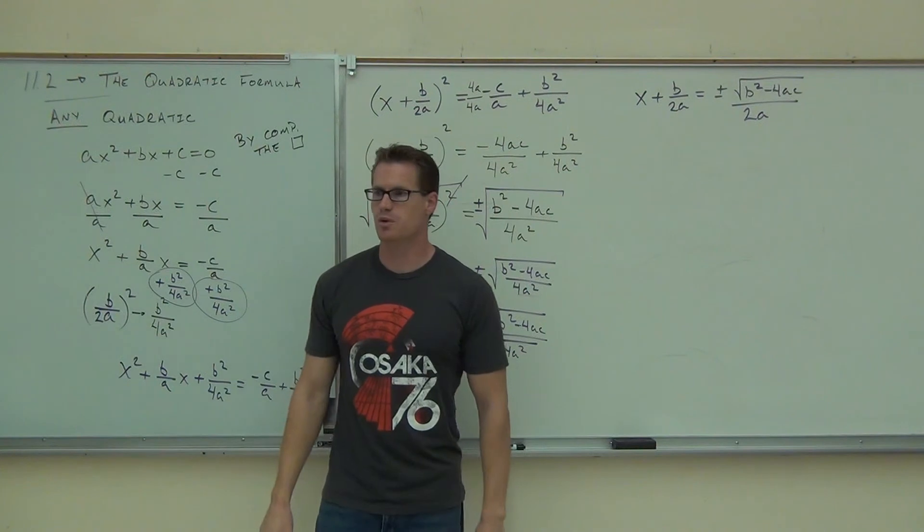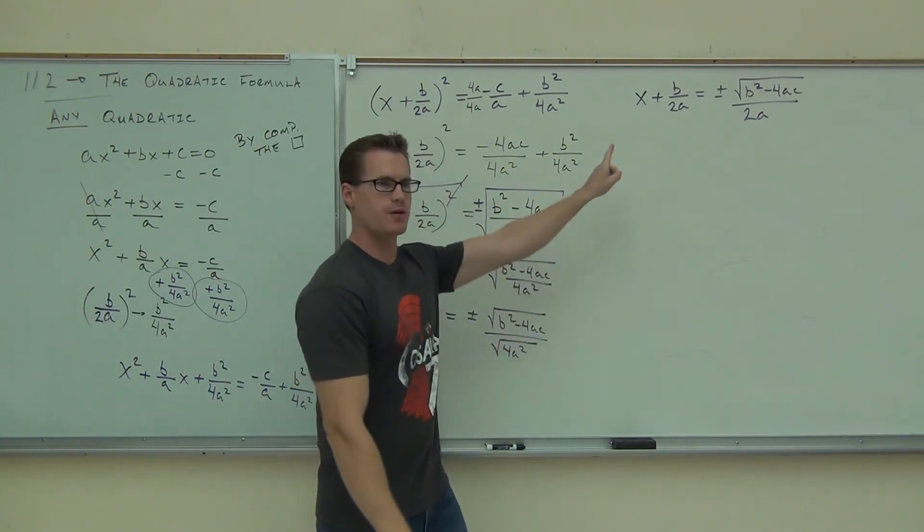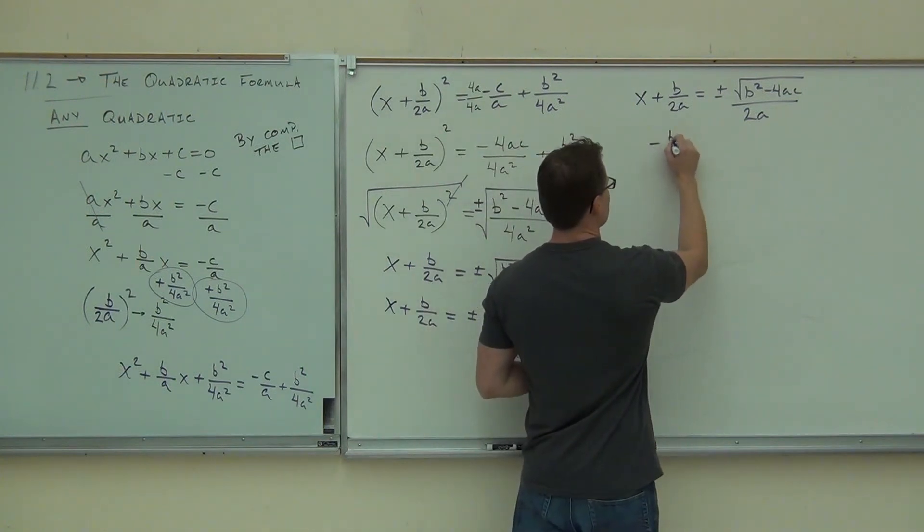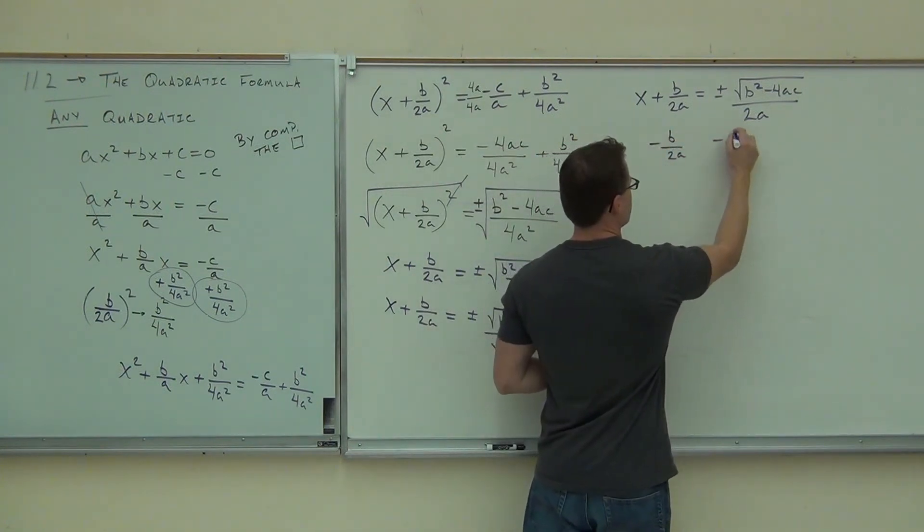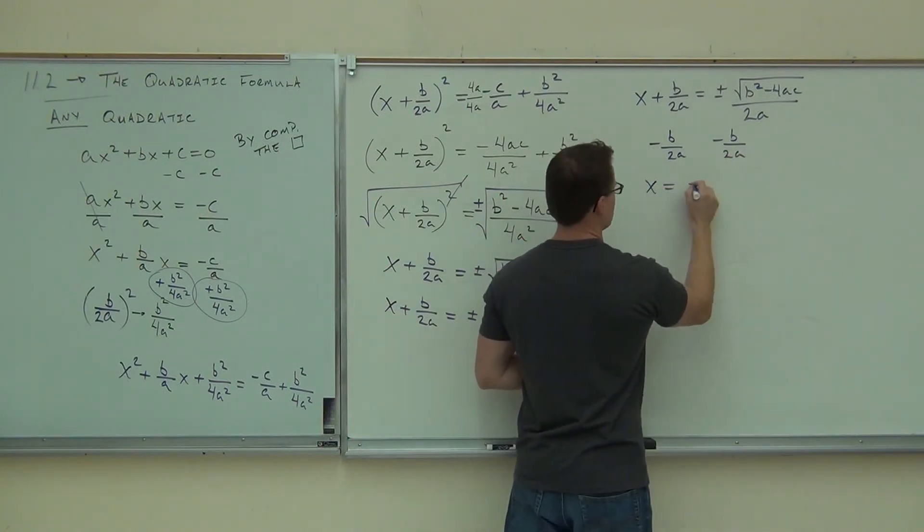Plus or minus the square root B squared minus 4AC divided by 2A. Where did the square root go? You did it. 4A squared gives you, when you take the square root, 2A. You know what? There's only two more steps. First step, solve for X. How am I going to solve that for X? Subtract B over 2A. Of course you mean subtract from both sides. Of course.